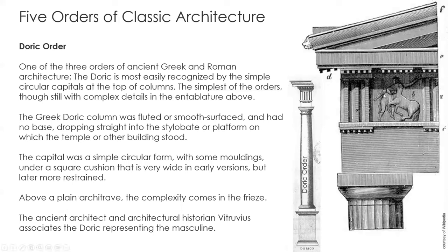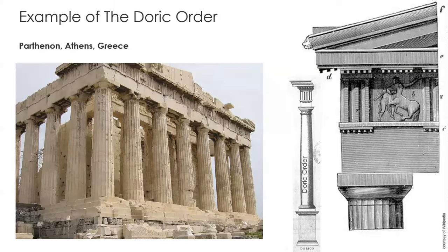The ancient architect and architectural historian Vitruvius associates the Doric with representing the masculine. An example of the Doric order is the Parthenon in Athens, Greece, which is world-famous for its early Greek architecture. You can see clearly that the column at the bottom does not have a base — that's the early version of the Doric order. Later on they added the base, so it could be with or without a base.